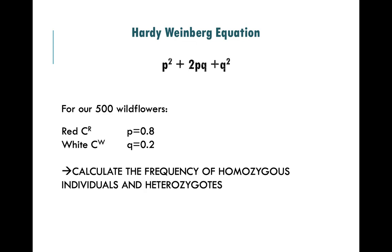The purpose of the Hardy-Weinberg equation is to be able to calculate the genotype frequencies of individuals in a population. Remember, you're using this equation to determine whether or not your population is changing, so you're using those allele frequencies to see how it's affecting the genotypes in your populations.